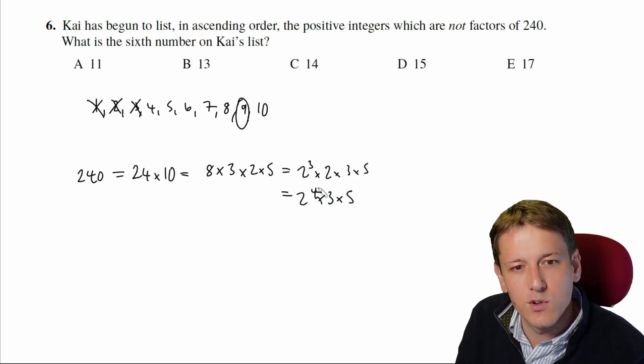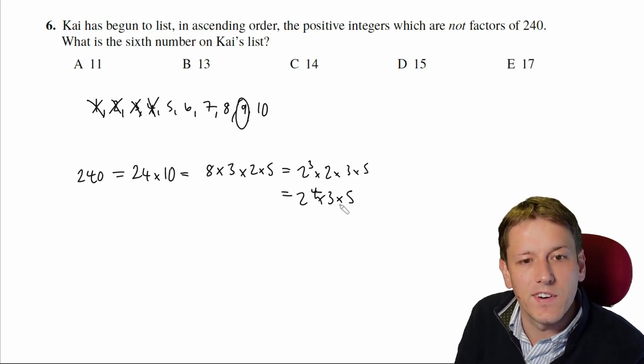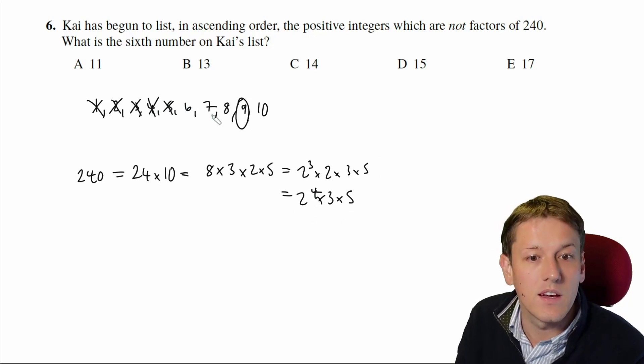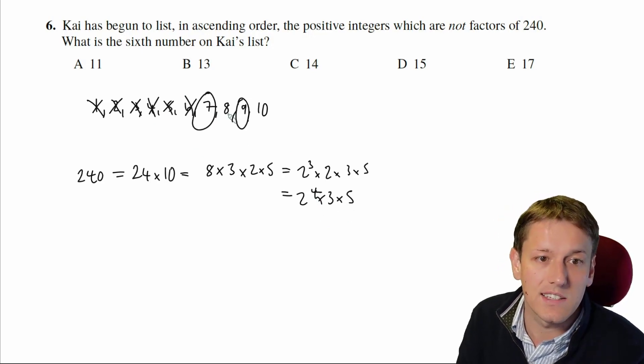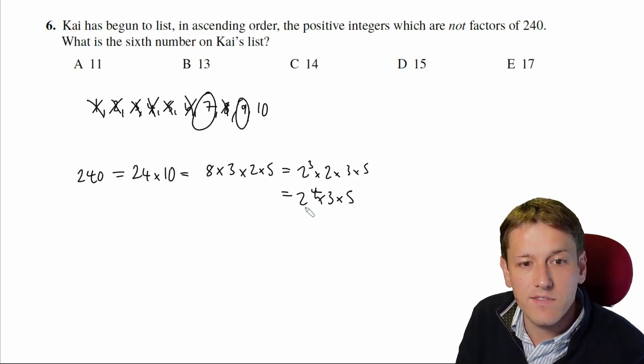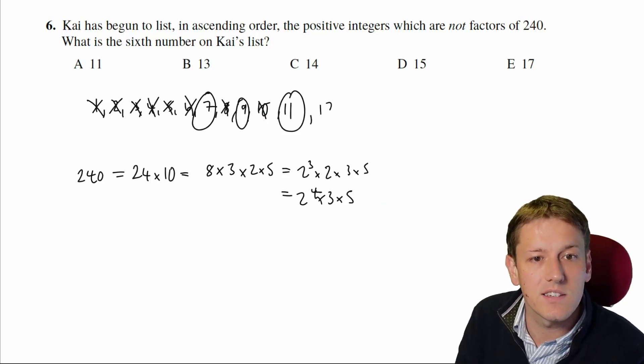So 4 is in there because 4 is 2 squared, and I've got a 2 to the 4, so I've definitely got a 2 squared in there. 5 is in there, so it's a multiple of 5. 6 is 2 times 3, well I've got a 2 and a 3, so 6 is a factor. 7 is not here, no 7s, so that's going to be in Kai's list. 8 is a factor, we can see that here. 10 is a factor because 2 times 5 is in there. 11, no 11s in the prime decomposition, so that's in Kai's list.